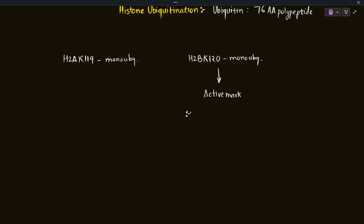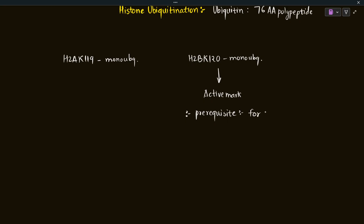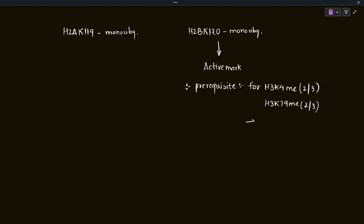H2B K120 ubiquitination is an active mark because it is a prerequisite for H3K4 methylation as well as H3K79 methylation — but not mono-methylation, rather the di- or trimethylation of H3K4 and H3K79 residues. For those methylation marks to occur, the H2B 120th lysine residue should be ubiquitinated. We already know that those methylation marks are active marks.